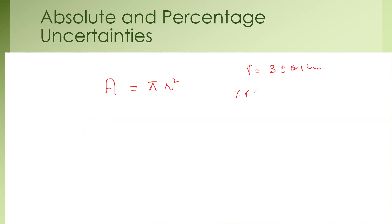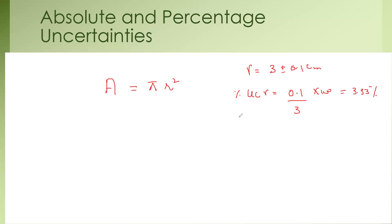First, we work out the percentage uncertainty in R. The percentage uncertainty in R is the uncertainty divided by the value recorded multiplied by 100: 0.1 multiplied by 100 divided by 3. That is 3.33%. So the percentage uncertainty in R is 3.33%.